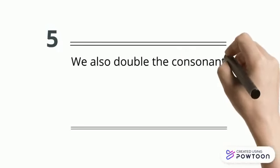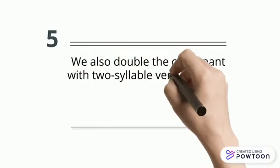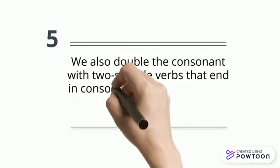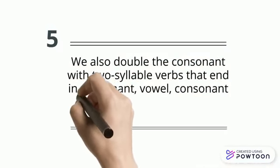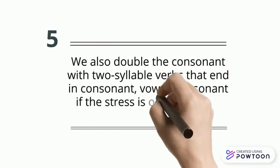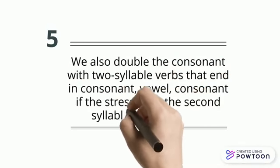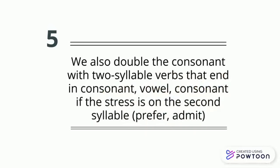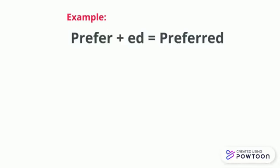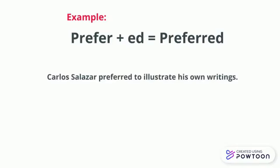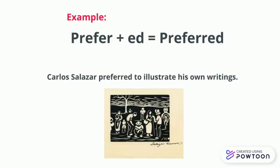We also double the consonant with two-syllable verbs that end in consonant-vowel-consonant, if the stress is on the second syllable, as in prefer or admit. For instance, prefer plus ED, which is preferred, like: Carlos Salazar preferred to illustrate his own writings.